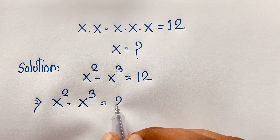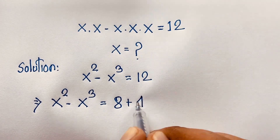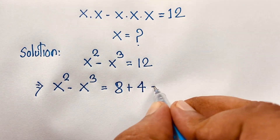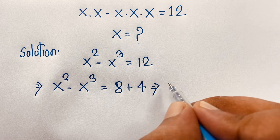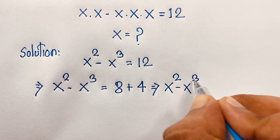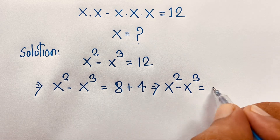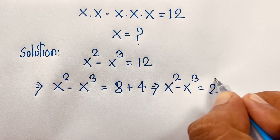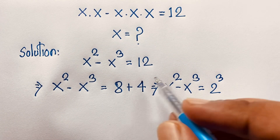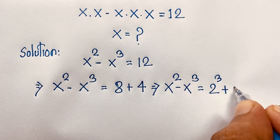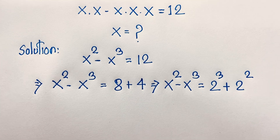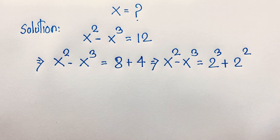Now, 12 can be written as 8 plus 4. So if I evaluate this expression, x squared minus x cubed equals 8 plus 4. Here, 8 is 2 to the power 3, meaning 2 times 2 times 2 equals 8, and 4 is 2 times 2, which is 2 to the power 2.